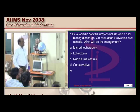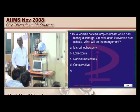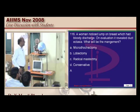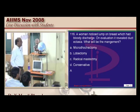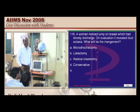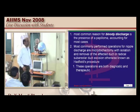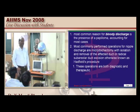A woman with bloody discharge from the nipple with ductectasia discovered — the two surgical options are microdochectomy or a more invasive procedure. In the modern era, we perform microdochectomy in the management of bloody nipple discharge from ductectasia.